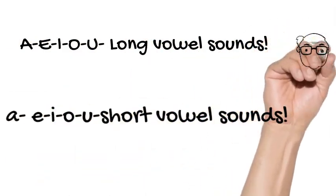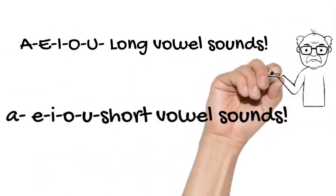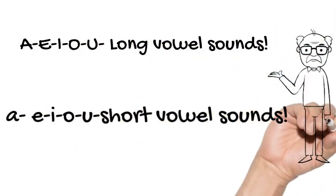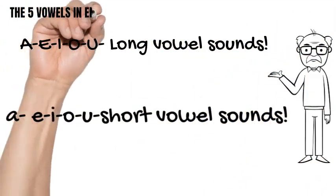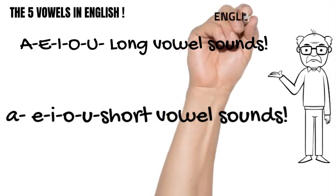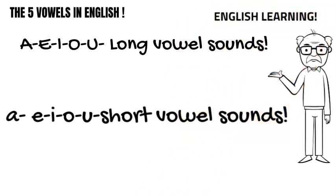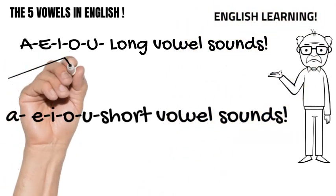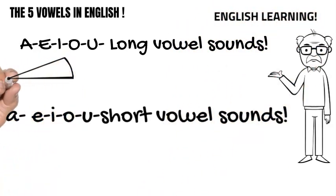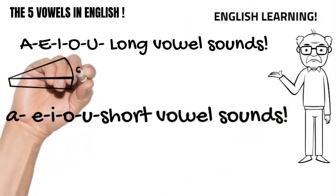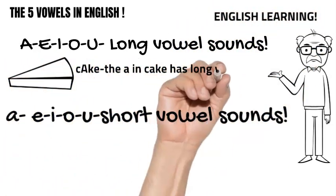We are learning about vowels — long vowel sounds: A, E, I, O, U. Cake. The A has a long vowel sound, A, as in cake.